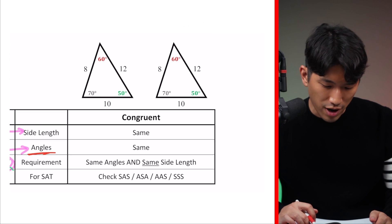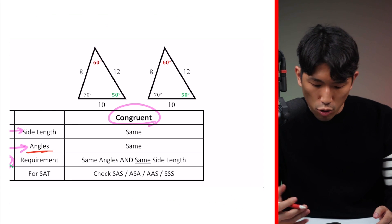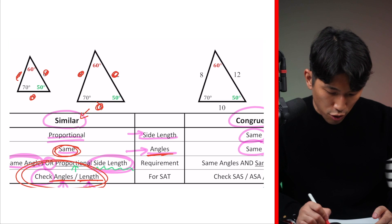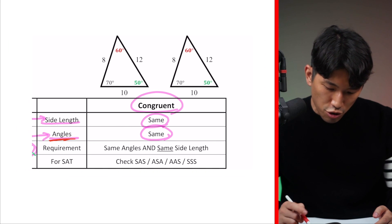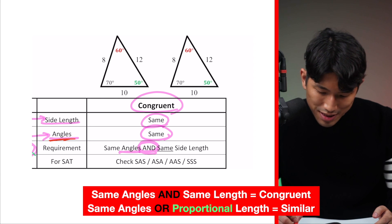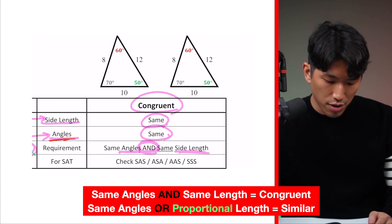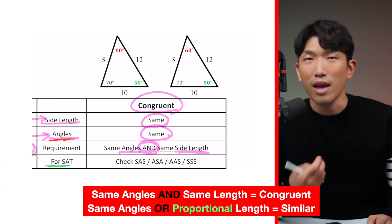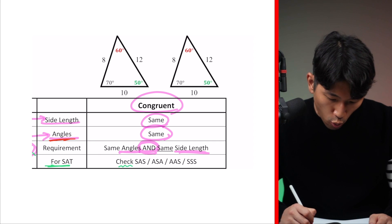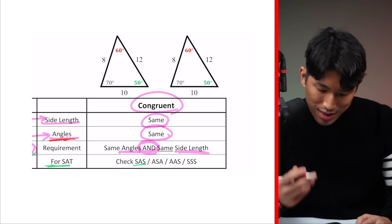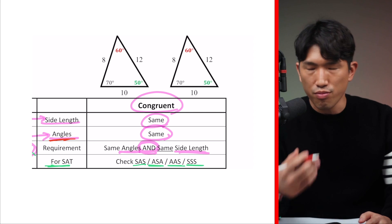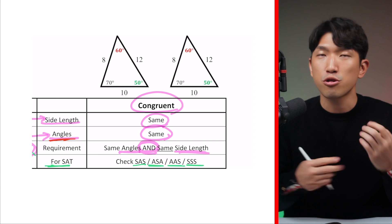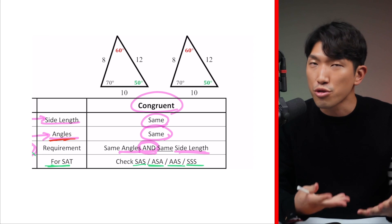Now let's go over congruent triangles. As mentioned, congruent means identical — same set of side lengths and same set of angles. Unlike similar triangles where you only need one or the other, for congruent triangles you have to have both. For the SAT, they'll test your ability to prove whether two triangles are congruent, and for that, it has to meet one of four conditions: SAS (side-angle-side), ASA (angle-side-angle), AAS (angle-angle-side), or SSS (side-side-side). These four conditions are the formulas to prove whether two triangles are identical.